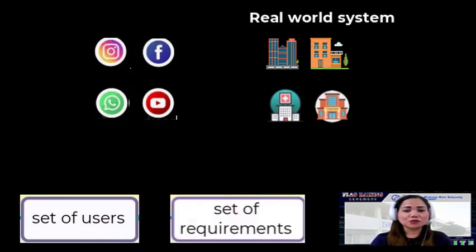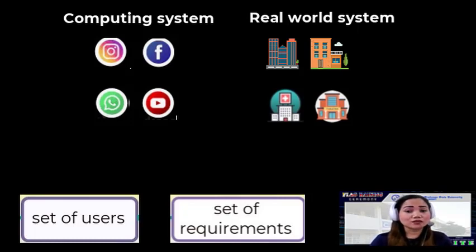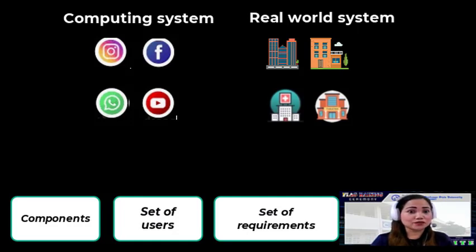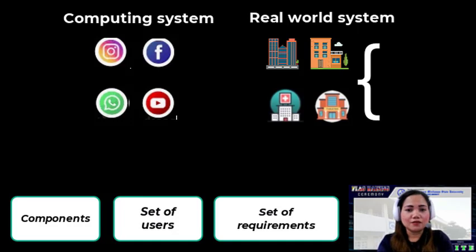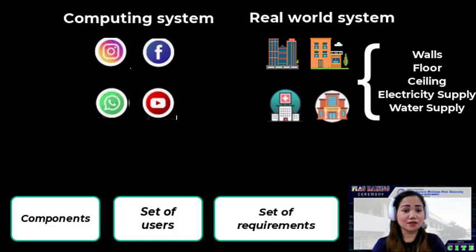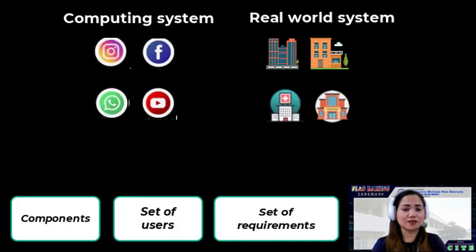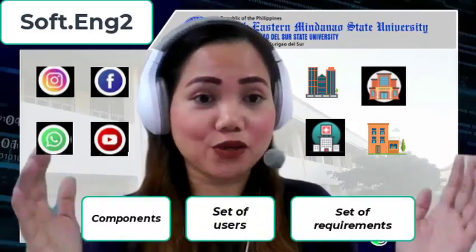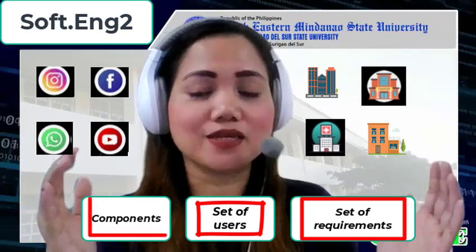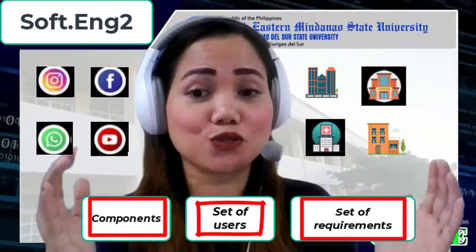All systems, whether real-world or computing, have certain things in common: they are built up of components or modules which need to interact and work together in order to fulfill the purpose of the system. For example, in a building, all buildings have walls, floors, ceilings, electricity supply, and water supply — different buildings, but with different sets of users and requirements. Similarly in software systems like Instagram, WhatsApp, and Netflix. So a system can be defined by three factors: the users of the system, the requirements of those users, and the components chosen to build the system to serve the users and requirements.